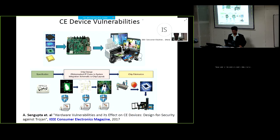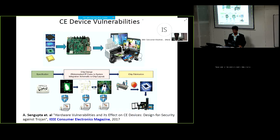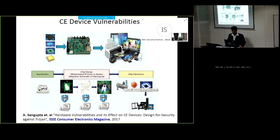At the heart of every consumer electronics device, we have a system on chip or application-specific integrated circuit. The design of every such SOC starts with a specification followed by integration of multiple third-party intellectual property cores in the form of schematic or HDLs, which would be further taken through floor planning, partitioning, and layout generation, followed by chip fabrication. Each of these stages between specification and chip fabrication is vulnerable to external threats which need to be protected against.